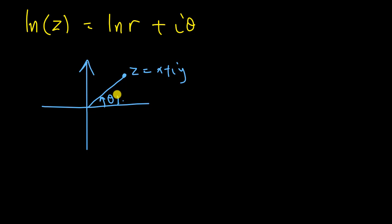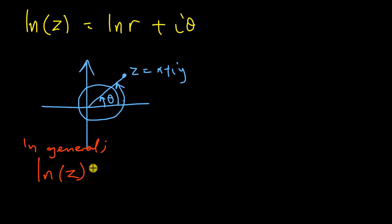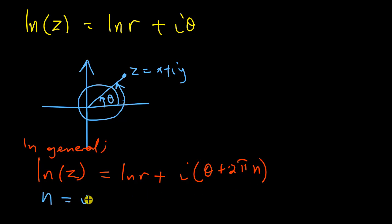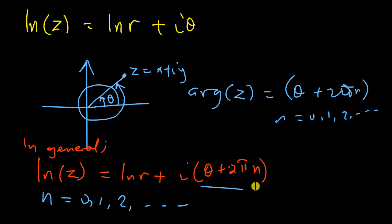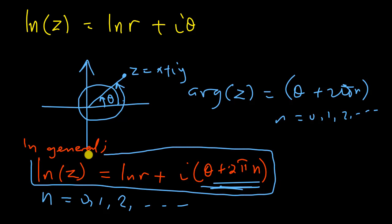However, there are more arguments, because if I rotate 360 degrees and come back, that's also another valid argument — and I could keep doing that. So in general, the natural log of z is the natural log of r plus i times (theta plus 2 pi n), where n equals 0, 1, 2, and so on. Every time I make a rotation, I get another argument. When n is 0, I get the principal logarithm.